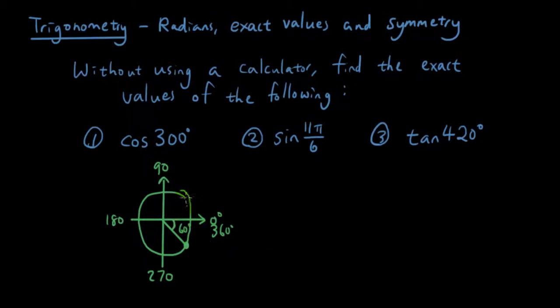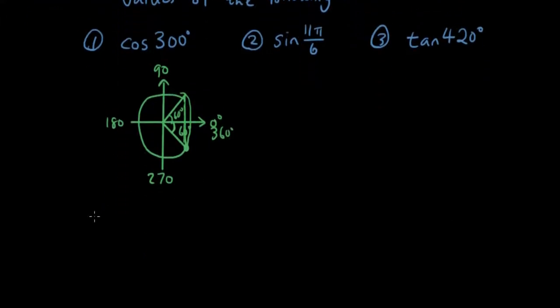Now you can see here using symmetry that it'll have the same x coordinate which is the cosine. It'll have the same corner as cos 60. So you can say cos 300 is the same as cos 360 minus 60. And if you remember our last tutorial, that is the same thing as cos theta. So that's cos 60.